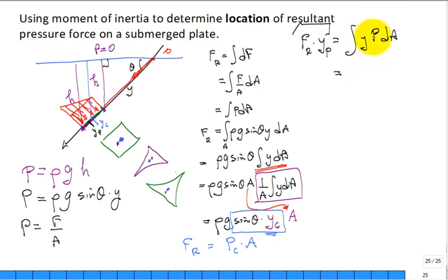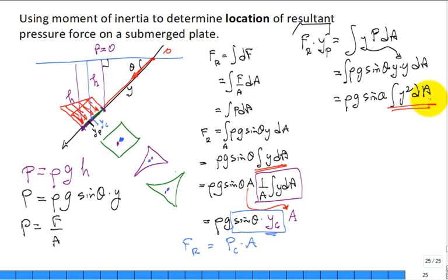Okay, so what we have is, what is pressure? Rho G sine of theta times Y times Y times dA. That one Y goes right there, the integral. Guess what? Rho comes out, G comes out, sine of theta comes out. We're integral of Y squared dA. And what exactly is that? Our second moment for that area.